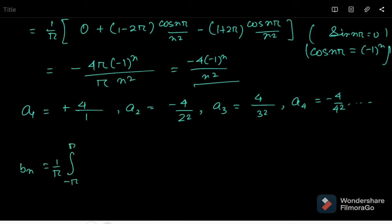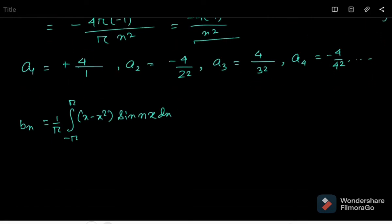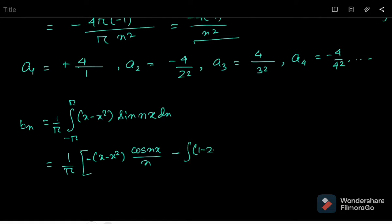We perform the integration of (x minus x²) sin(nx) dx using integration by parts, remembering the LIATE protocol. First, integrating sin(nx) gives minus cos(nx)/n, and differentiating (x minus x²) gives (1 minus 2x).